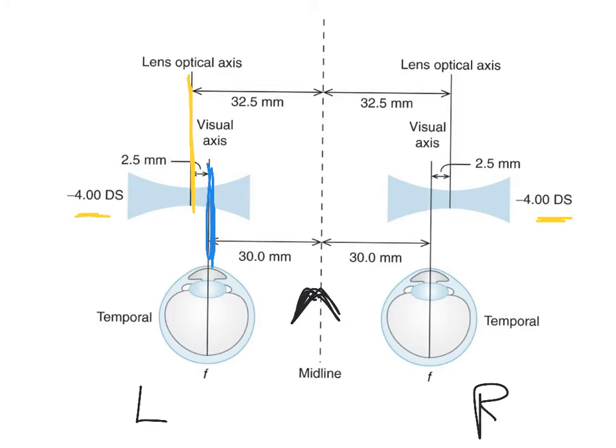This happens because the PD is wrong. The PD is supposed to be 32.5 but let's say the patient measured the wrong PD or the optician measured the wrong PD. So the patient is not looking through the optical axis. They're looking through a point of the lens that is not the optical axis.